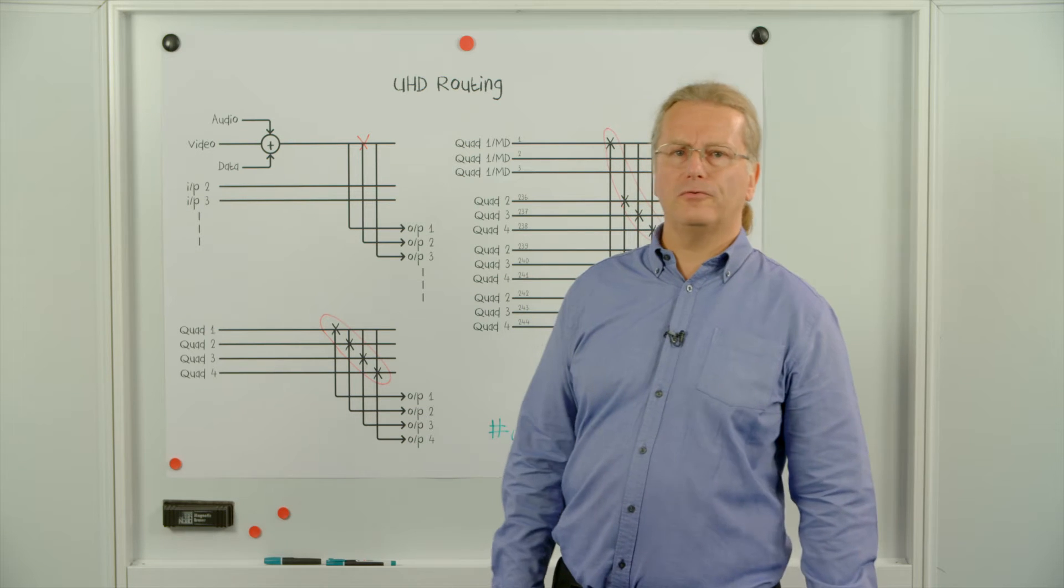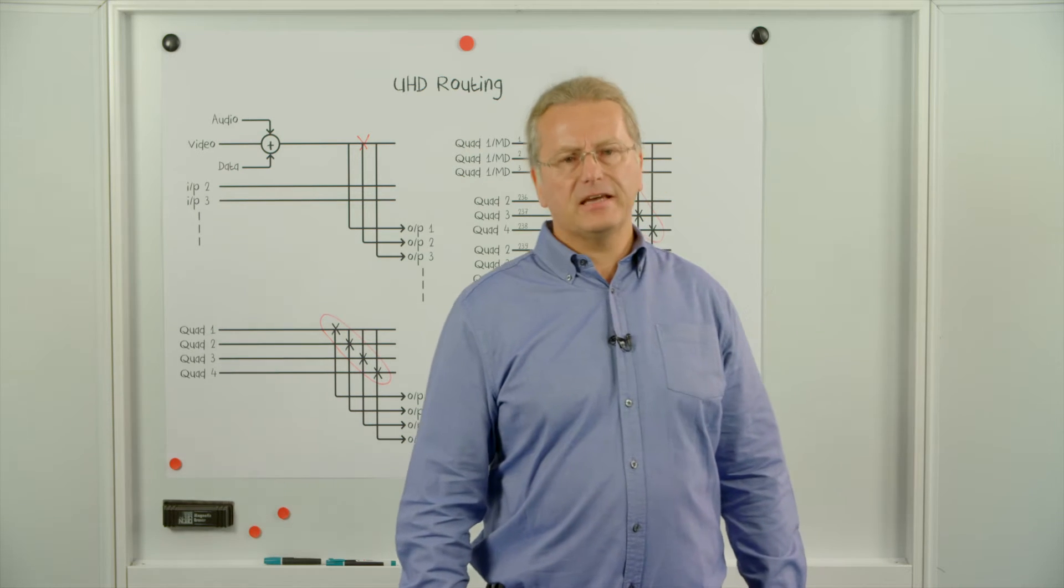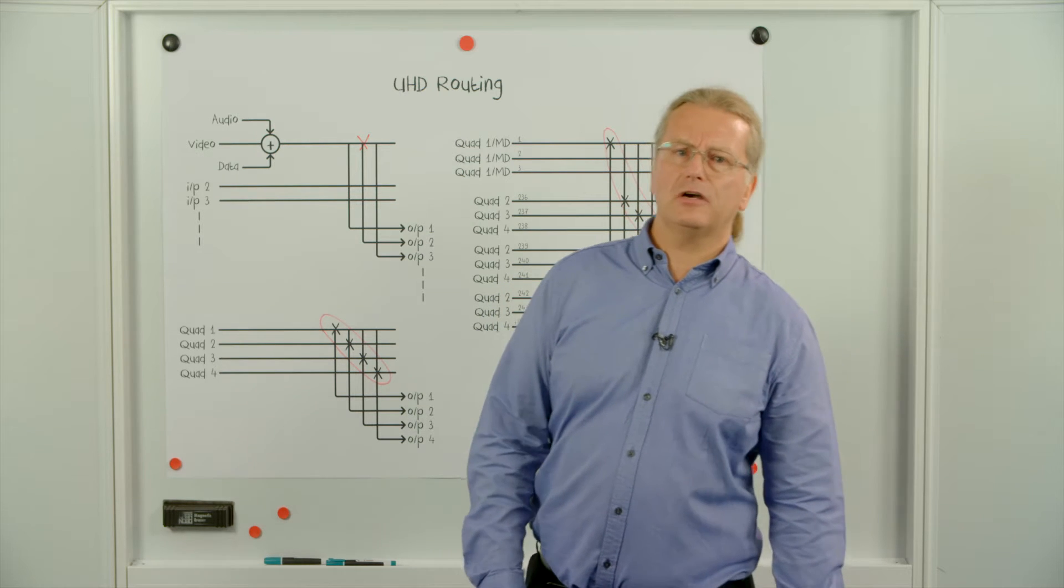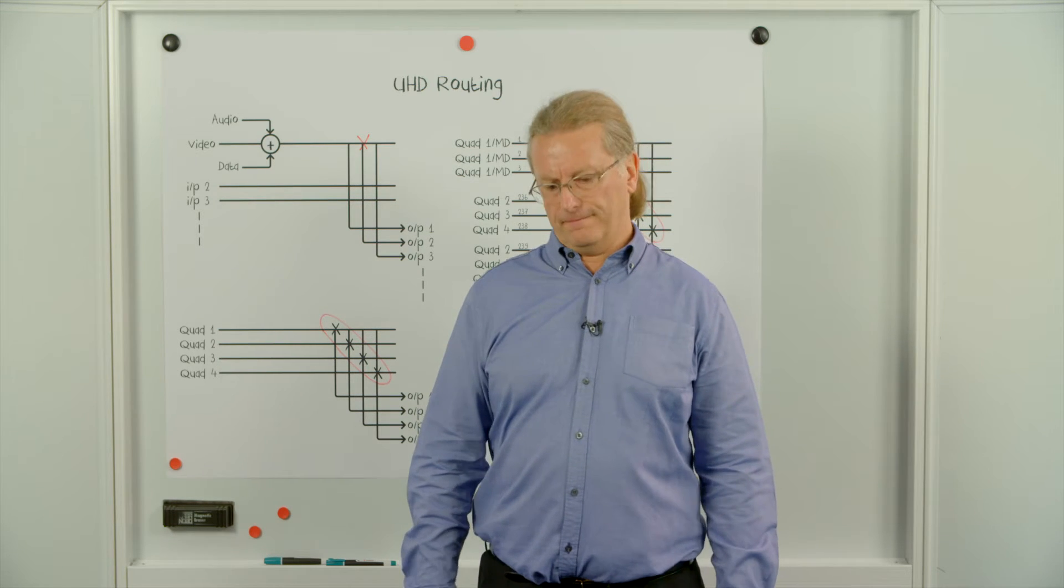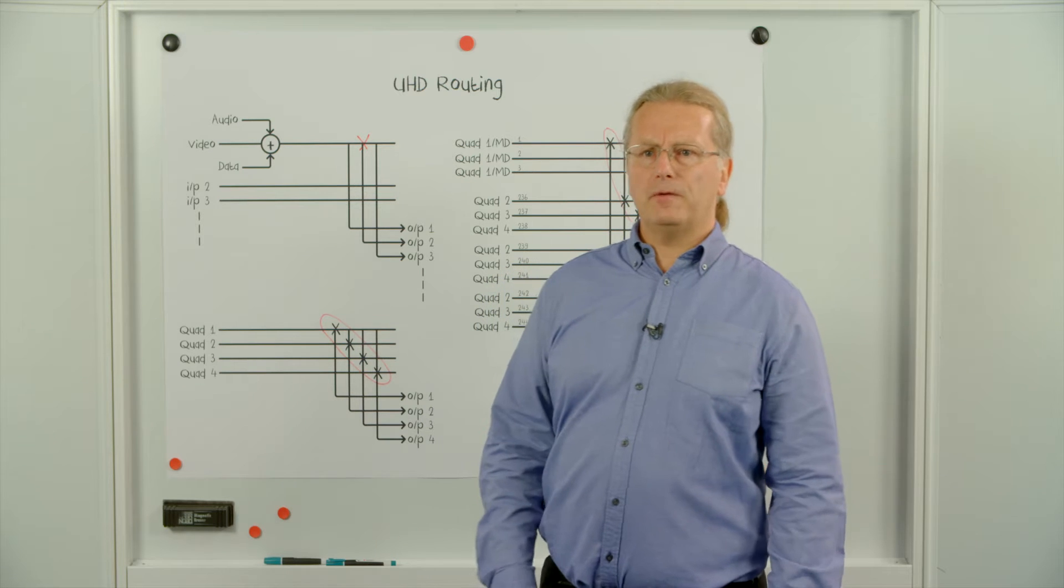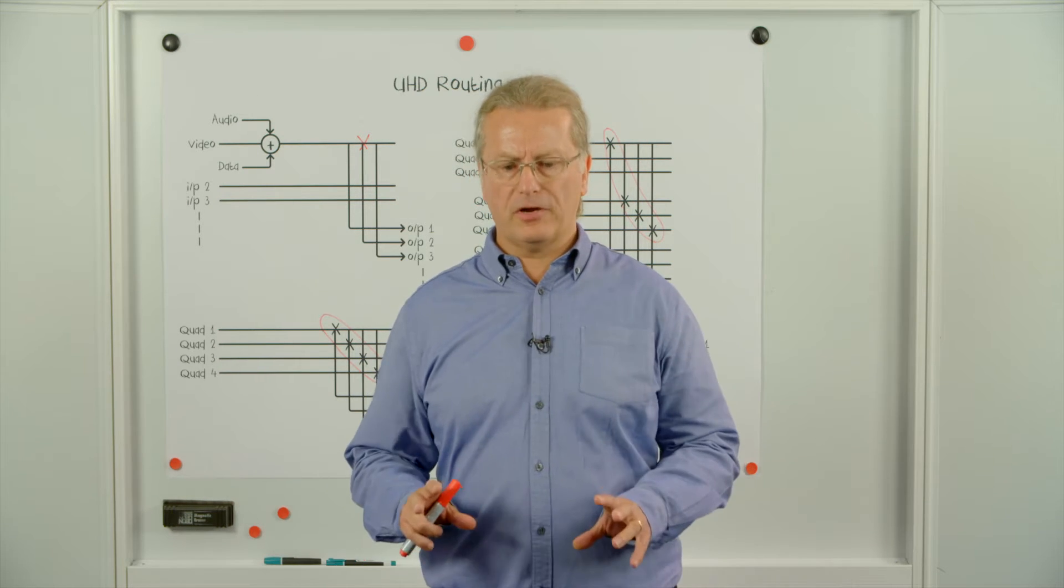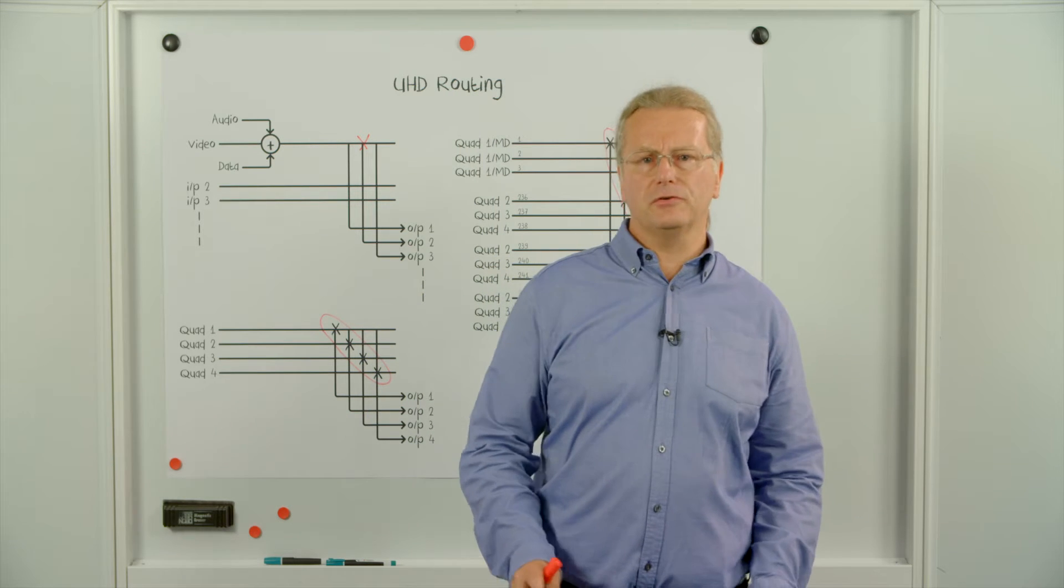Firstly, will it actually make all four cross points? And secondly, will they be co-timed? In UHD, co-timing of cross point switching is important. A big picture is made up of four quadrants. If they don't all switch at the same time, you're going to break the illusion of one large picture to your viewers.